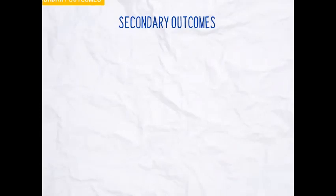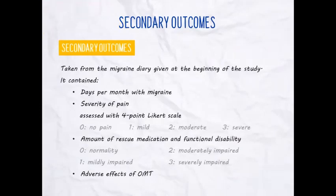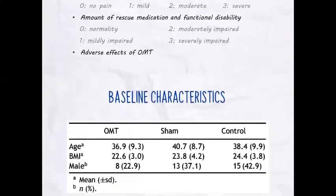Now let's move to the description of the secondary outcomes. They were all taken from the Migraine Diary given at the beginning of the study. This diary contained: days per month with migraine; severity of pain assessed with a 4-point Likert scale — 0 no pain, 1 mild, 2 moderate, 3 severe; the amount of rescue medication; functional disability — assessed similarly: 0 normality, 1 mildly impaired, 2 moderately impaired, 3 severely impaired; and lastly, the adverse effects of OMT.